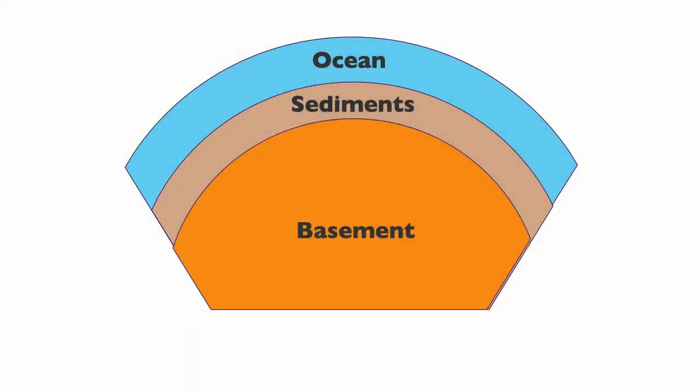Let's start with some theoretical concepts and work out how this impacts carbonates. If you take a simplified cross-section of the earth focused on sequence stratigraphy, we recognize three main things: basement, sediment, and water in the ocean shown in blue. We can also put on this slide the center of the earth as a reference point.